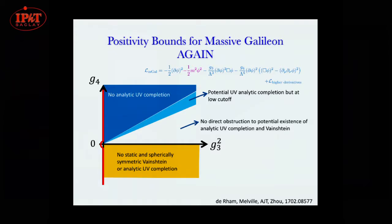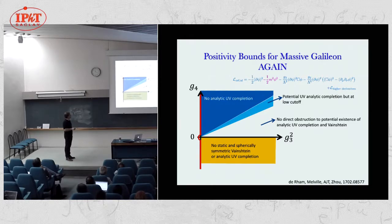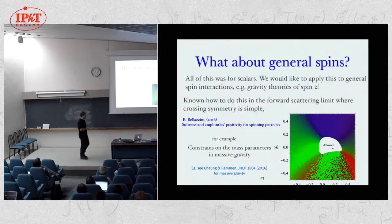Going back to the Galilean as an example: using these conditions for a massive Galilean with cubic and quartic terms, you find there's a whole range of Galilean parameters for which there is no analytic UV completion, a range which is okay and satisfies the bounds, and a separate region where you couldn't have the Vainshtein mechanism in these theories.